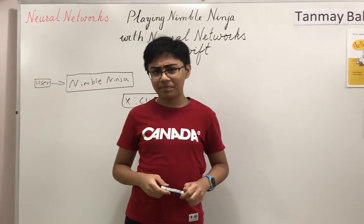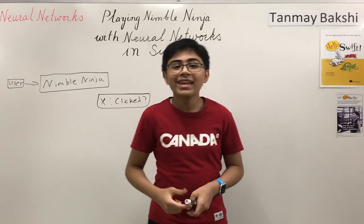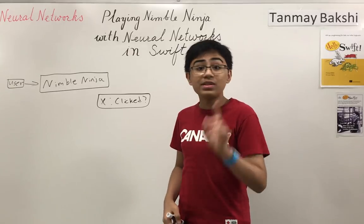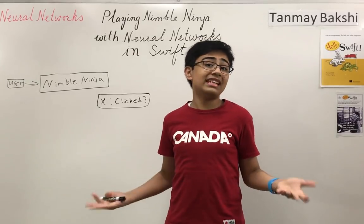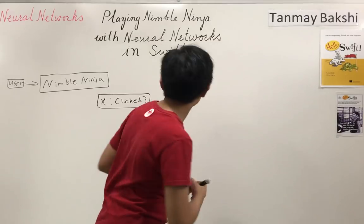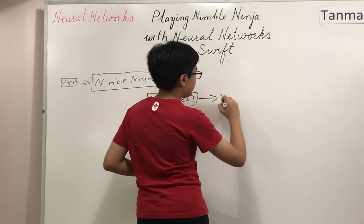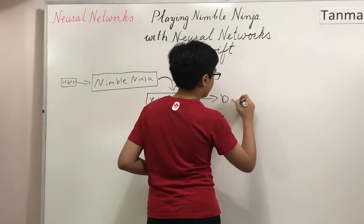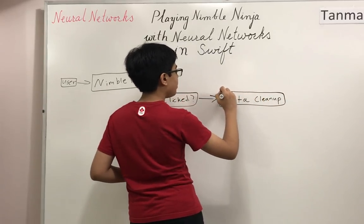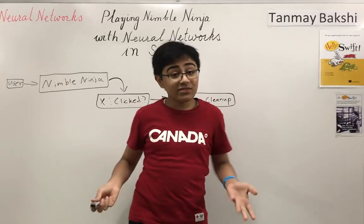There's a problem: when playing Nimble Ninja, you're not tapping the screen nearly as often as you aren't tapping it. That means you've got thousands more rows in the data where you're not clicking than where you are. Some data cleanup is required, or else the neural network has poor quality data — it'll either overfit or not train properly. So once the game generates this data, it goes through a data cleanup script to balance out the values.